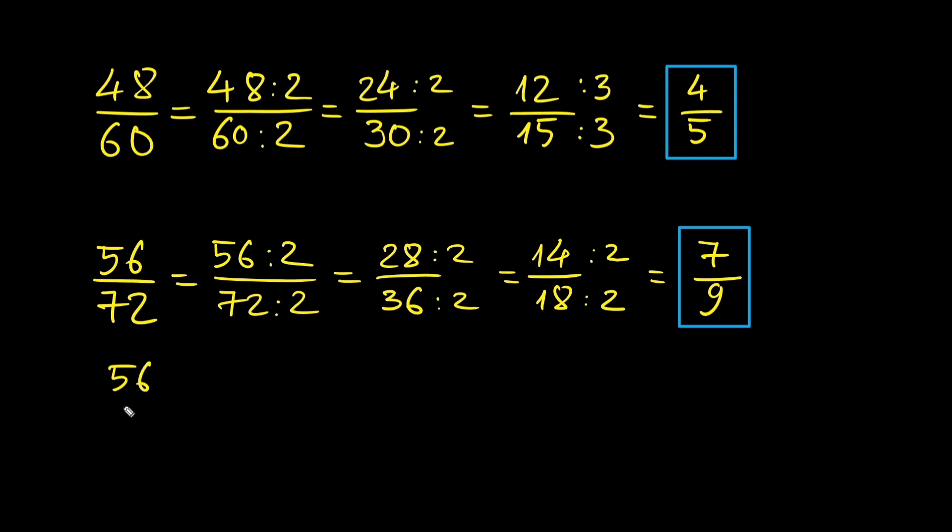Going back to the original problem, if you recognize that 56 and 72 are both divisible by 8 from the beginning, you could have just divided both by 8 and got the answer directly. But if you are not aware of that, just divide by 2 step by step.